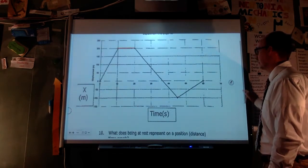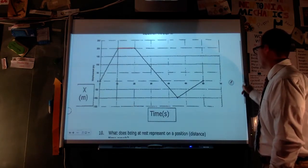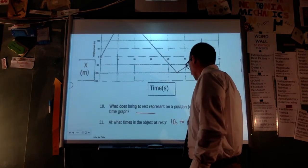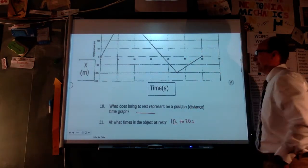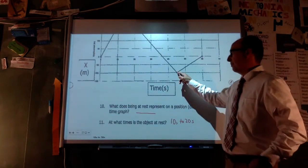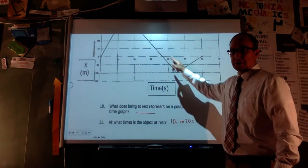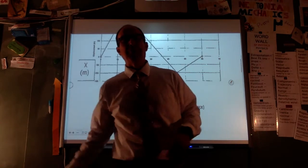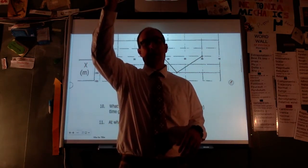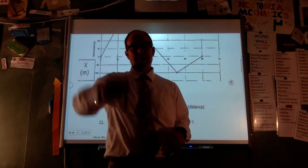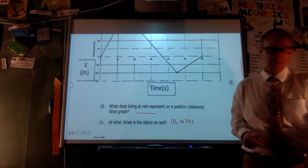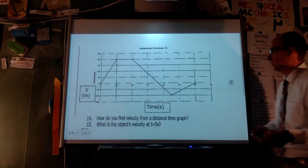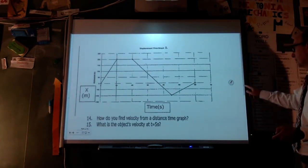It also passes through rest at another point where it's going backwards and then starts heading back up — but I wouldn't say it's truly at rest there; it's just passing through zero velocity. It's like throwing something in the air: at its peak height, when it changes direction, it passes through velocity equal to zero momentarily. When I think of something at rest, it stays there for an amount of time.